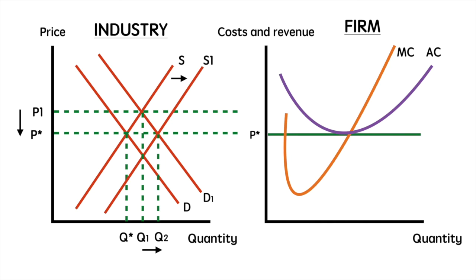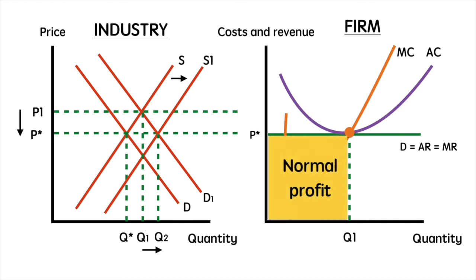Again, we first locate the point at which MR equals MC. We drop down to the X axis to find our profit maximizing level of output. Next, we move upwards towards the AC curve and follow that point across to the Y axis to determine our average cost per unit. Similarly, we follow the same line towards our demand curve to determine our average price per unit. Our total revenue and total costs in this case are now the same, resulting in normal profit being earned by the firm.